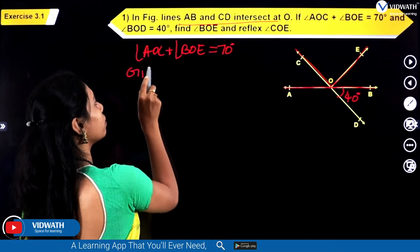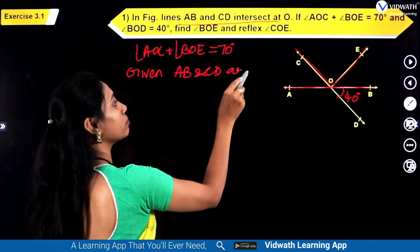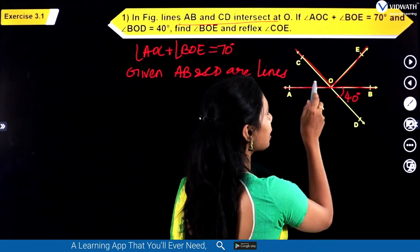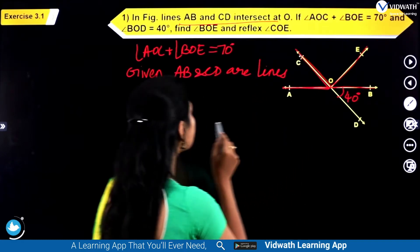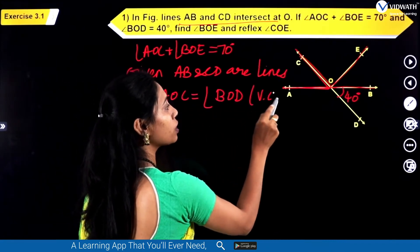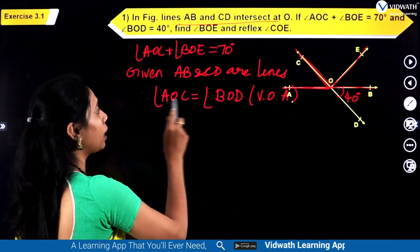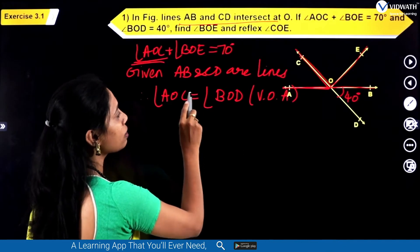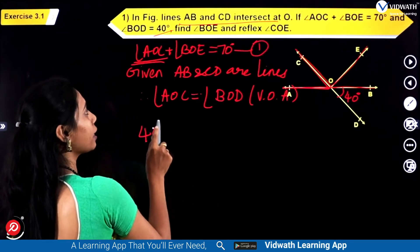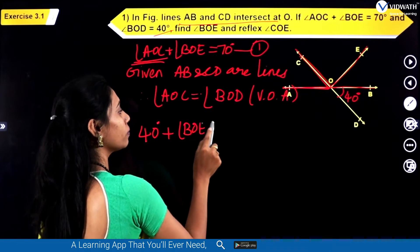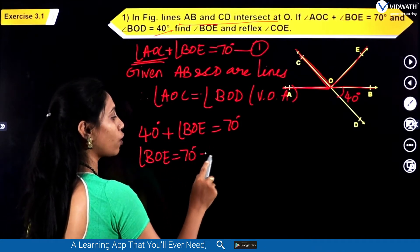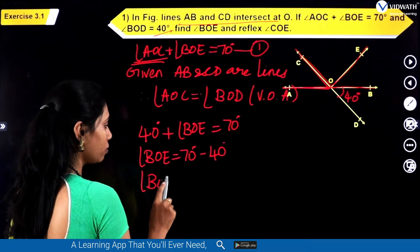Given AB and CD are lines. When two lines meet at one point, vertically opposite angles are equal. So we can write angle AOC is equal to angle BOD — vertically opposite angles are equal. The value of BOD is given as 40 degrees. Substituting, we get 40 degrees plus angle BOE is equal to 70 degrees.